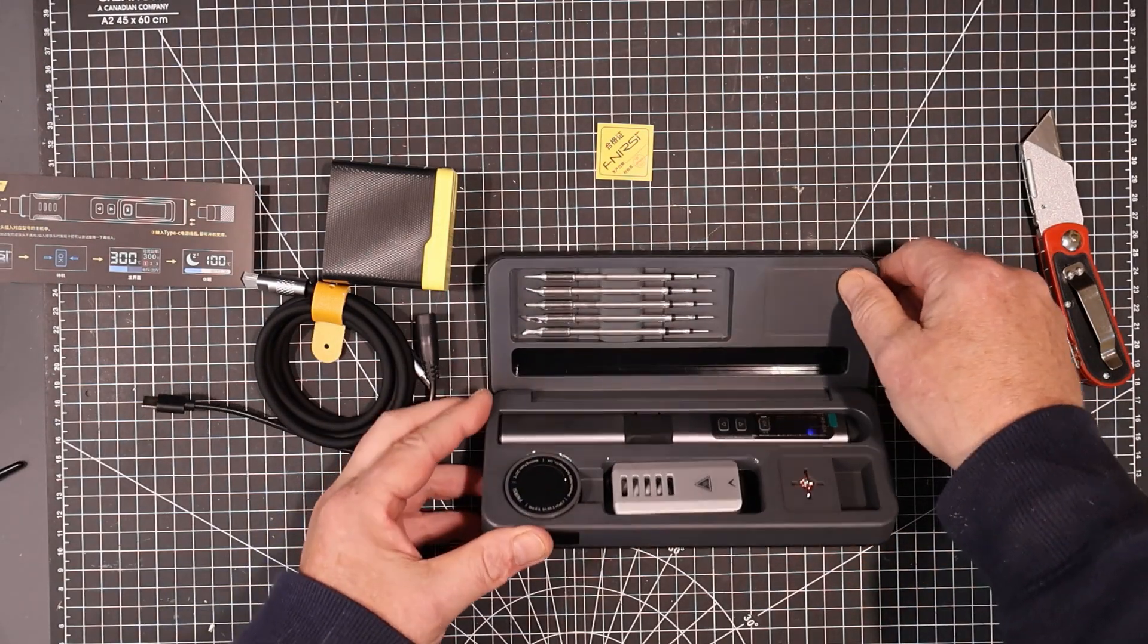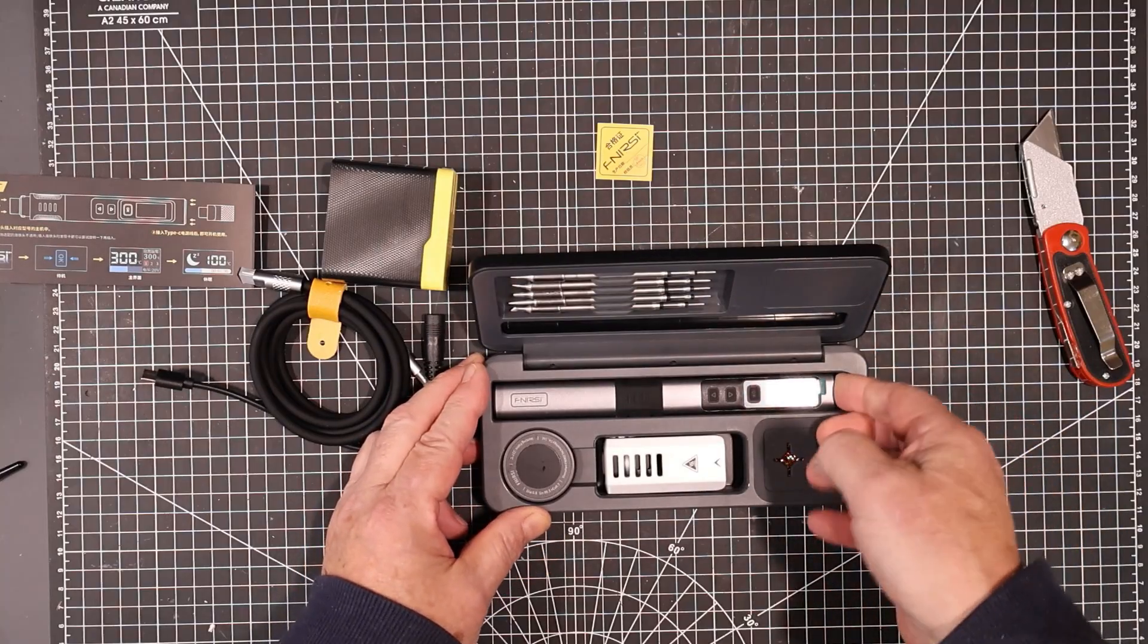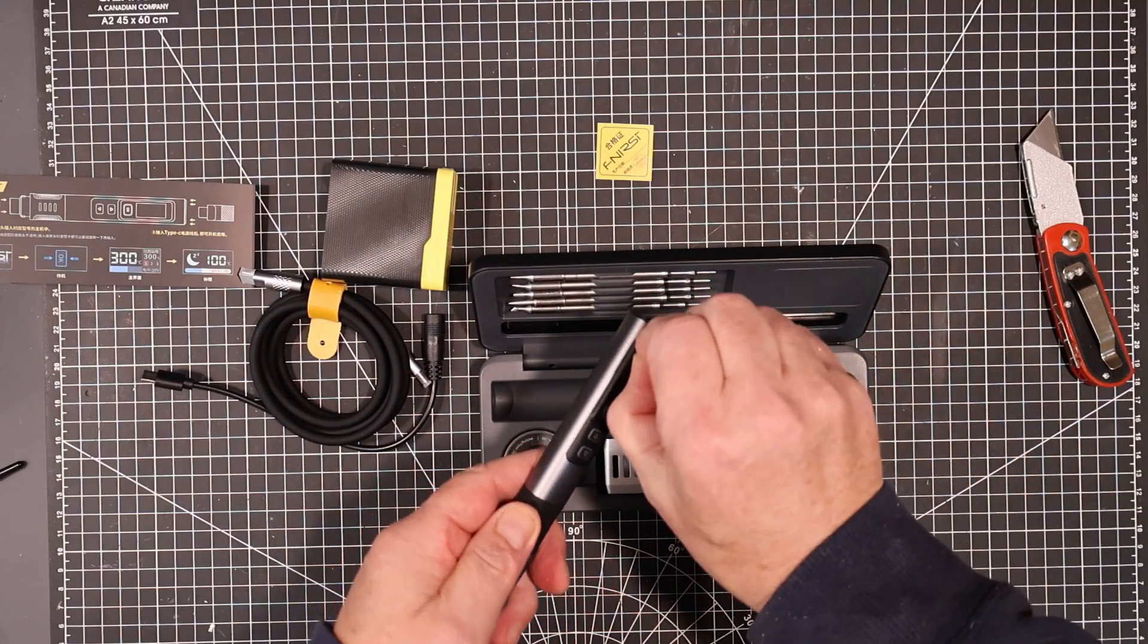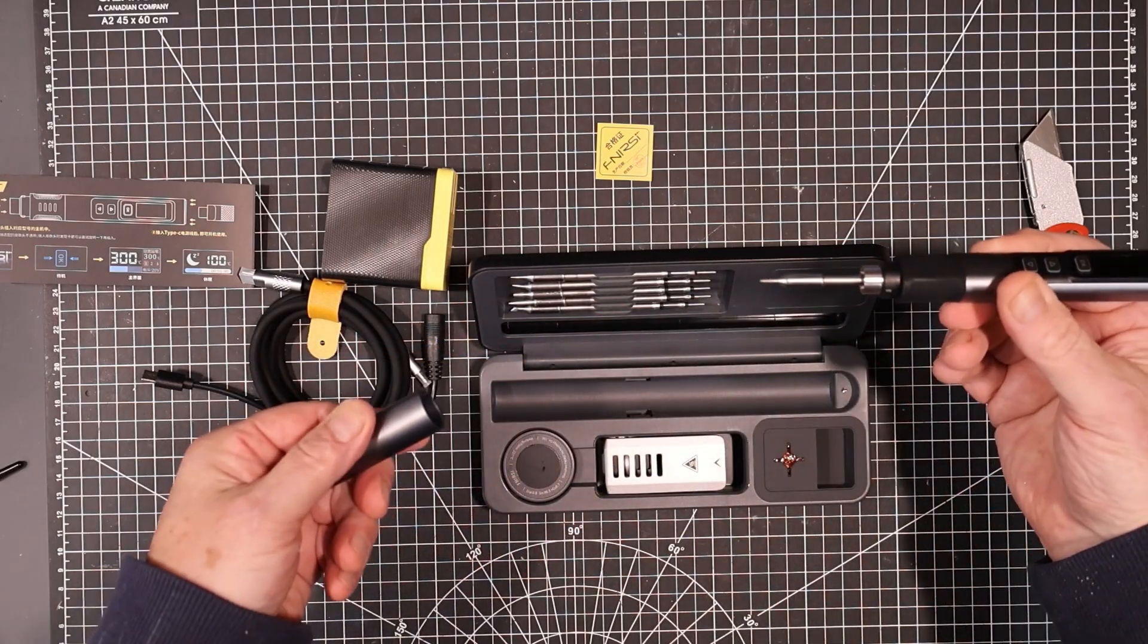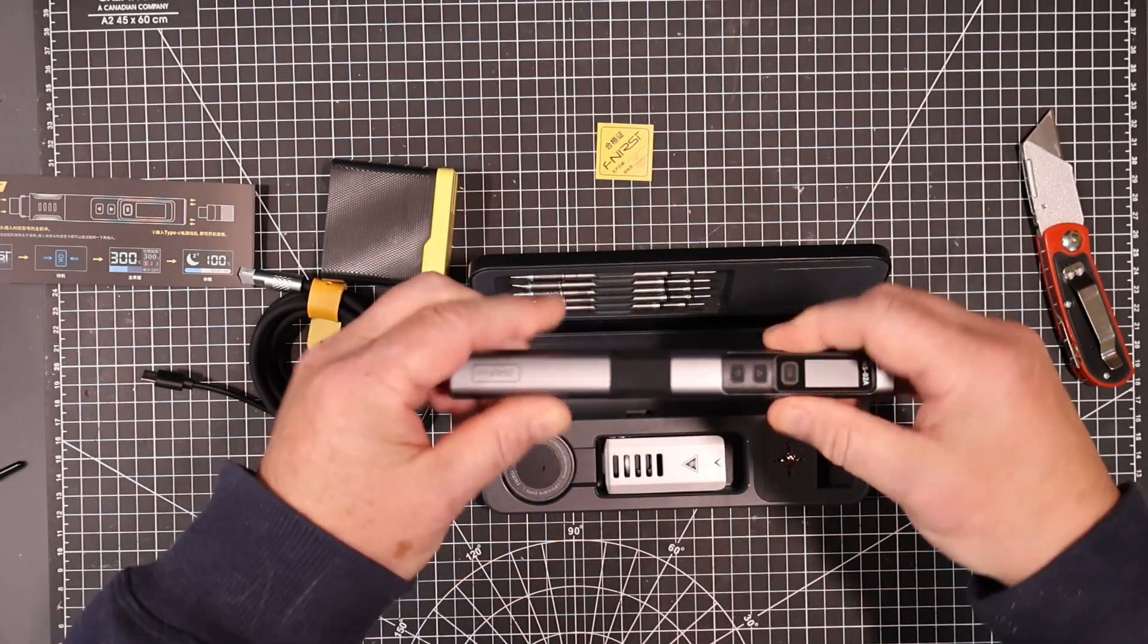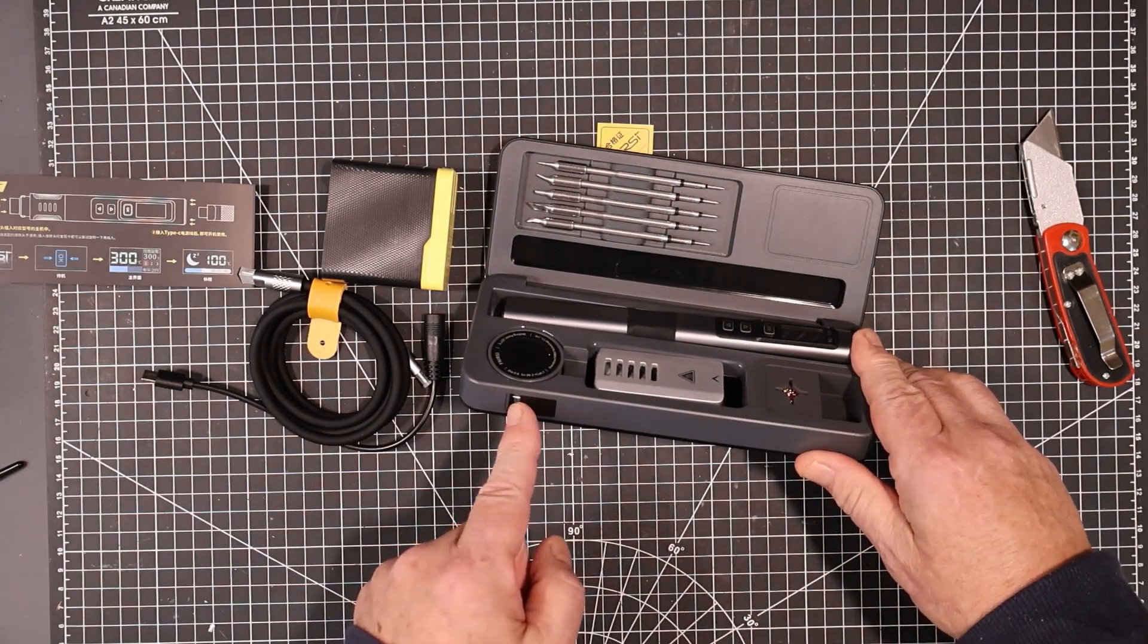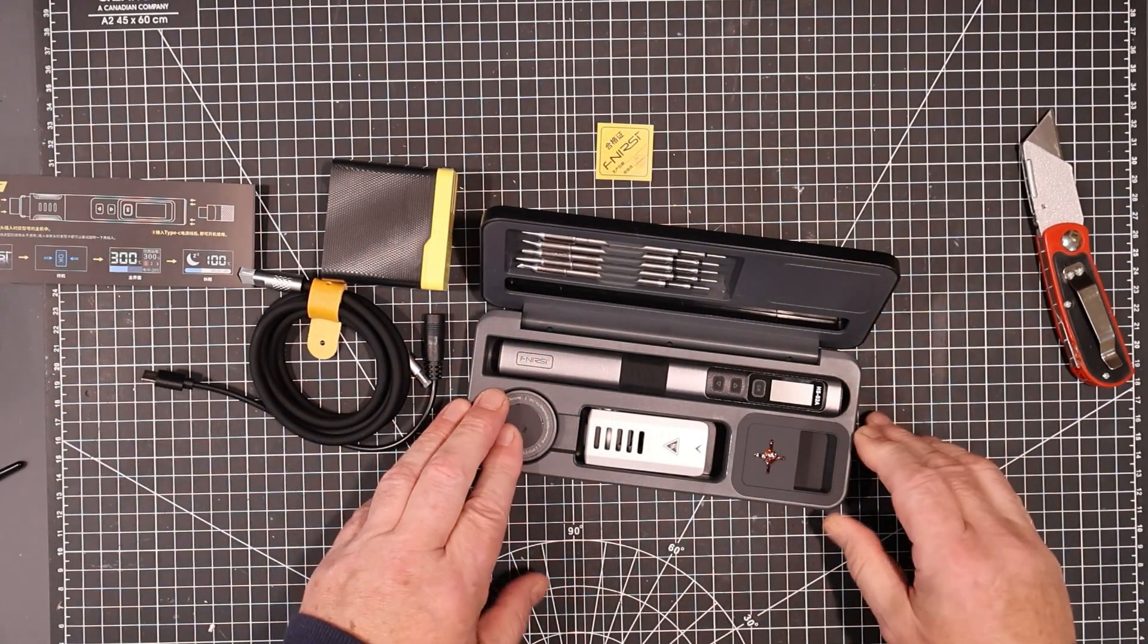Oh, there we go. There it is. So it comes with a kit of five different tips. There's the iron itself. Very nice. It's very similar, of course, to the HS01 in its configuration. Oh, it comes with six tips. Well, that is really nice. And it comes with some solder, which comes out here. So you can put whatever solder you want onto this reel and use that.